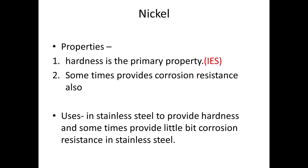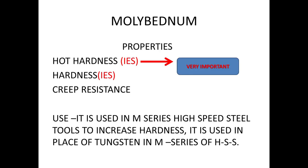The next element is nickel. The primary property given by nickel is hardness, and in stainless steel it also provides corrosion resistance. So nickel is used in stainless steel to provide both hardness and corrosion resistance.